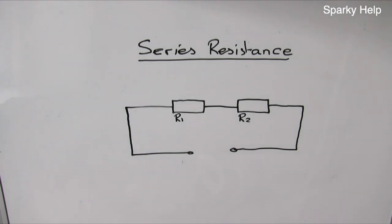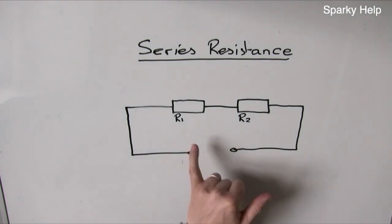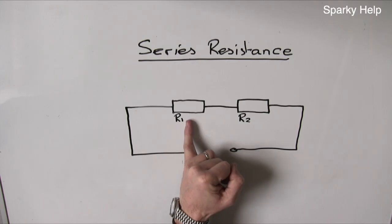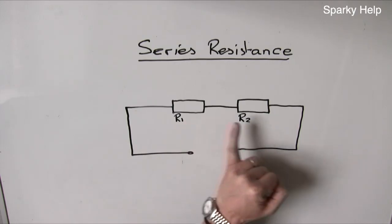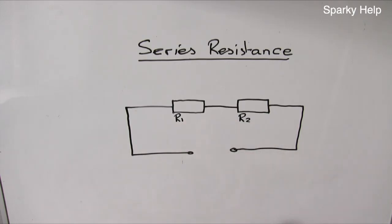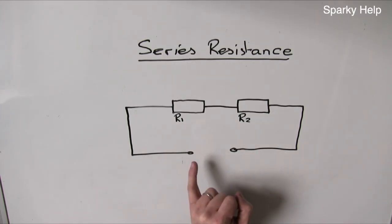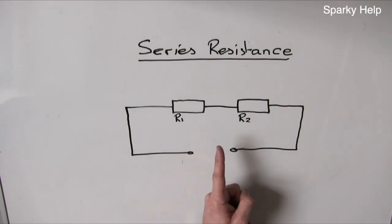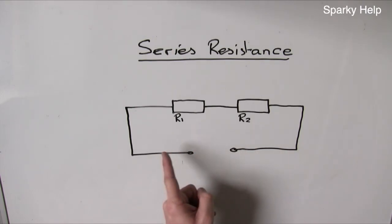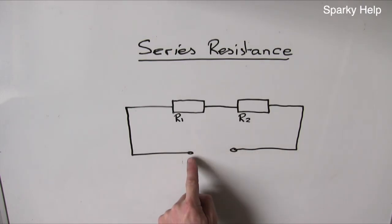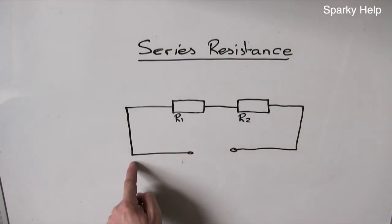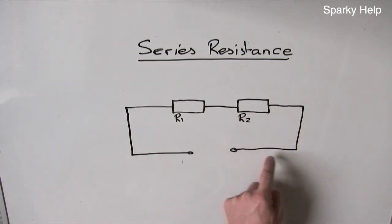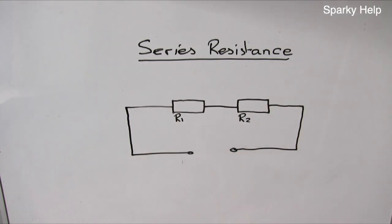Series resistance. It's important to note: resistance is opposition to current flow. In a series circuit, everything goes in line. Current can only go one direction — there's nowhere else to go.